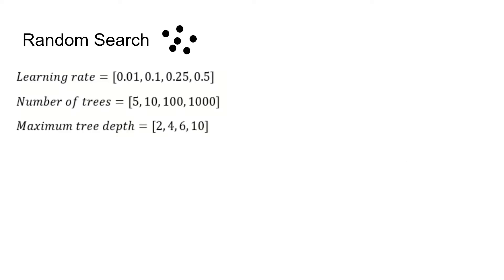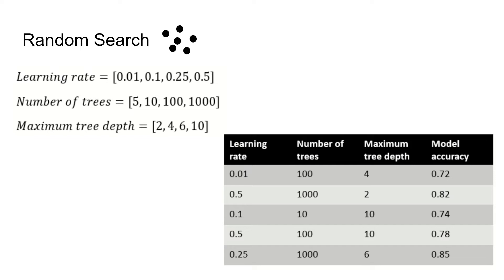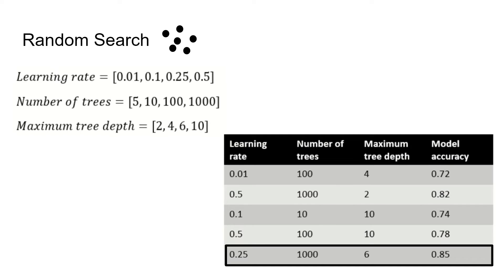Next is random search. Here we provide a set of hyperparameters — in this example we're looking at learning rate, number of trees, and maximum tree depth — and random search essentially just samples from this space to find what hyperparameters result in the best model performance. For example, with 5 iterations, in the first iteration it sampled a learning rate of 0.01, 100 trees, and a maximum tree depth of 4, giving an accuracy of 0.72. We apply many iterations, then select the hyperparameters that resulted in the best model performance — in this case from the last iteration: a learning rate of 0.25, 1,000 trees, and a maximum depth of 6.